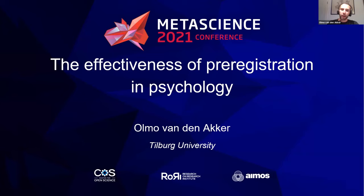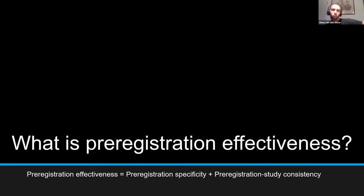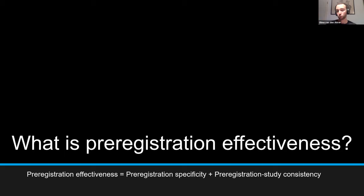What is pre-registration effectiveness? When is a pre-registration actually effective in achieving its goal? We devised a simple formula: pre-registration effectiveness equals pre-registration specificity times pre-registration–study consistency. Specificity is about how many details are in the pre-registration — are all important study elements covered extensively so that you are actually able to do the research? I also call this 'producibility,' a tongue-in-cheek comparison to reproducibility. If a pre-registration is really extensively outlined, it's possible to produce the research.